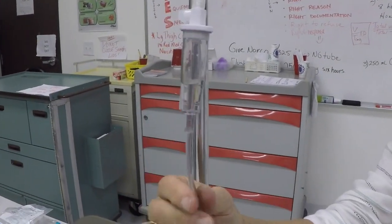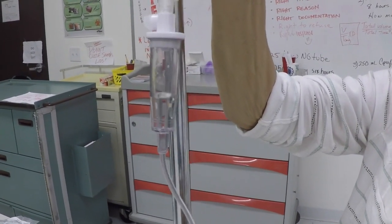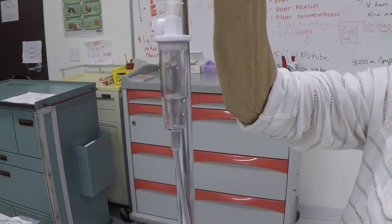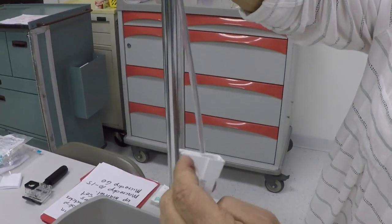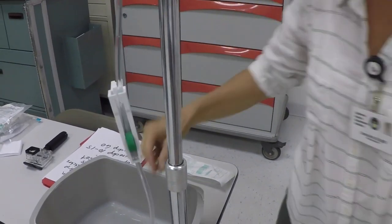This is called our drip chamber and if you notice, we can adjust the drips which will adjust the flow of our IV fluids. This is a roller clamp, so that's how we adjust the flow.